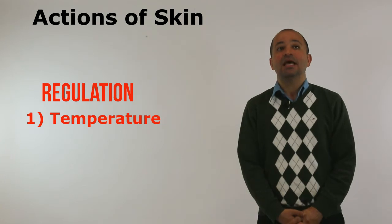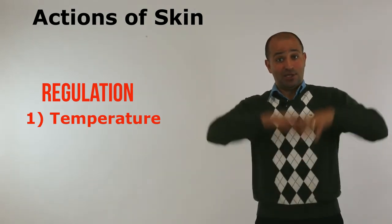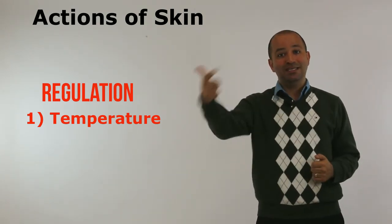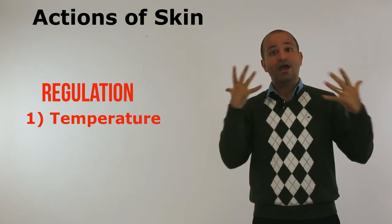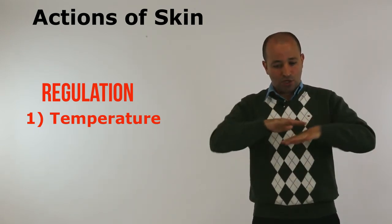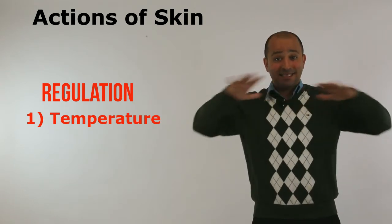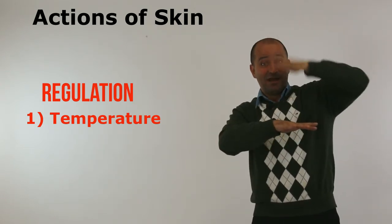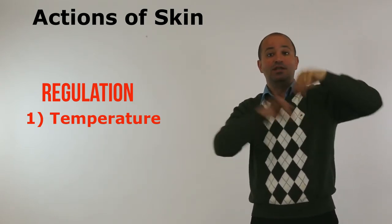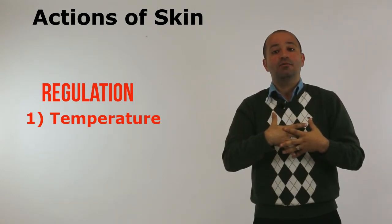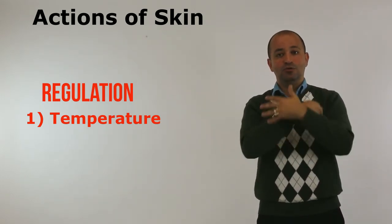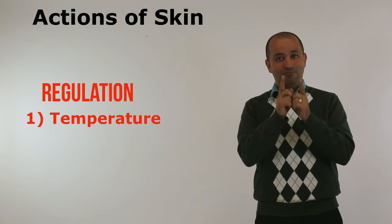The other thing is the skin can bring all the blood to the surface. When you go to a hot area, your skin becomes red. The reason is all the blood comes to the superficial skin, and the skin will allow the heat to evaporate from the surface of the body, and then the body inside will cool down. Temperature regulation.